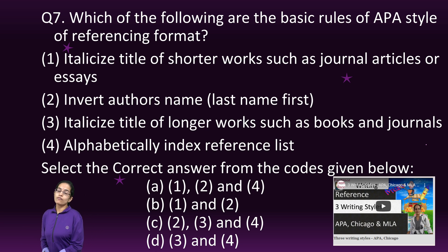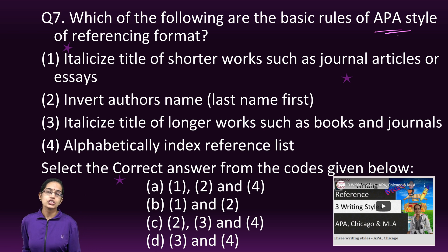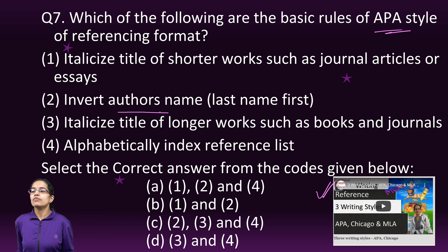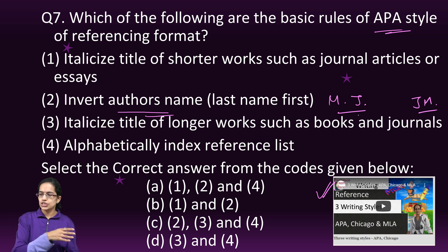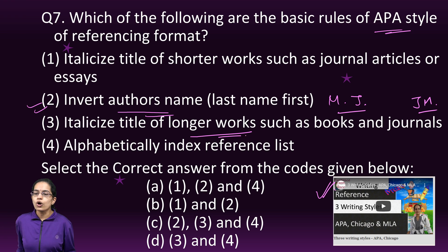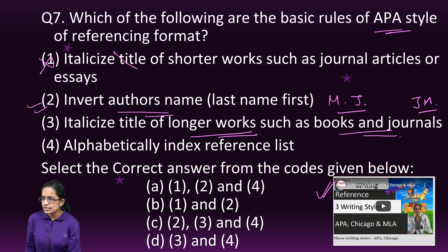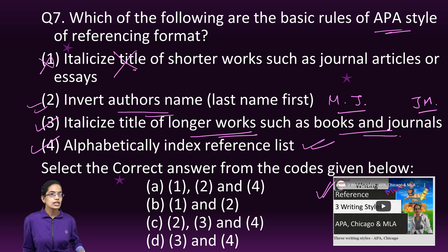The next question covers the various styles of writing. There are three major styles: APA, Chicago, and MLA. We have covered that in a separate lecture. What is important: we invert the author's name — for example, Manishika Jain would be written as Jain, then Manishika, with the last name first. You italicize the longer works such as books and journals, but you do not italicize shorter works — for shorter works, you put a quote around them. An alphabetically indexed reference list is also correct. Options two, three, and four are the right answers.